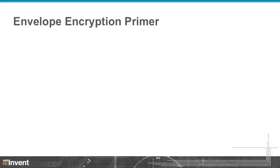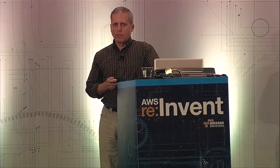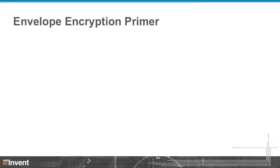Before we launch into exactly how things work in AWS, I want to make sure we're on the same page and have a little review on envelope encryption. The concept of envelope encryption is used throughout AWS and it's a best practice. So if we start with the generation of an encryption key, I've chosen to use a symmetric data key for the purposes of this example. Symmetric keys are typically preferred for bulk encryption of arbitrary data. That key gets generated from either software — something like OpenSSL, Bouncy Castle — or it could be generated in hardware.